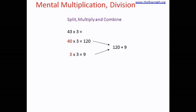And 3 threes are 9. Once the multiplication is done, let's combine the results: 120 plus 9 equals 129. So our product is 129. Let's take another example: multiply 48 by 6. One way to split 48 is 40 and 8, but there is another way.